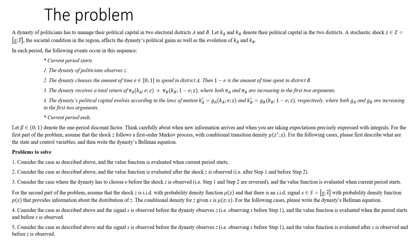Today we are going to analyze a decision problem again in terms of the Bellman equation. This is an information problem. We have a decision maker that is supposed to maximize its capital in two distinct districts. The real process through which the dynasty can optimize its capital stocks is affected by a random shock, Zed. The dynasty needs to take into account this shock even in cases where it's not observed — unobserved. Please read and go over the problem.